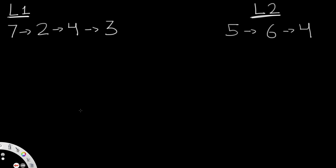The first step is we're given two linked lists — linked list one and linked list two — and we need to convert them into numbers. We'll have a value called num, starting at zero. This is a base 10 value: the ones place is 10 to the power of zero, the tens place is 10 to the power of one, the hundreds place is 10 to the power of two, and so on.